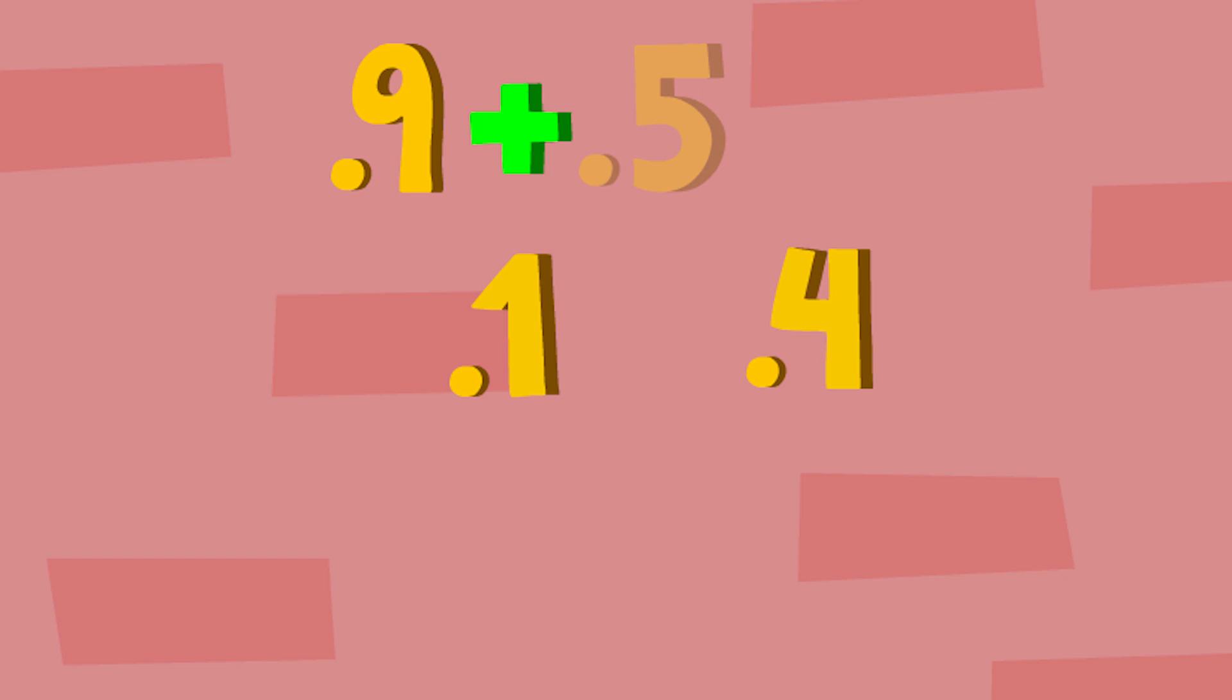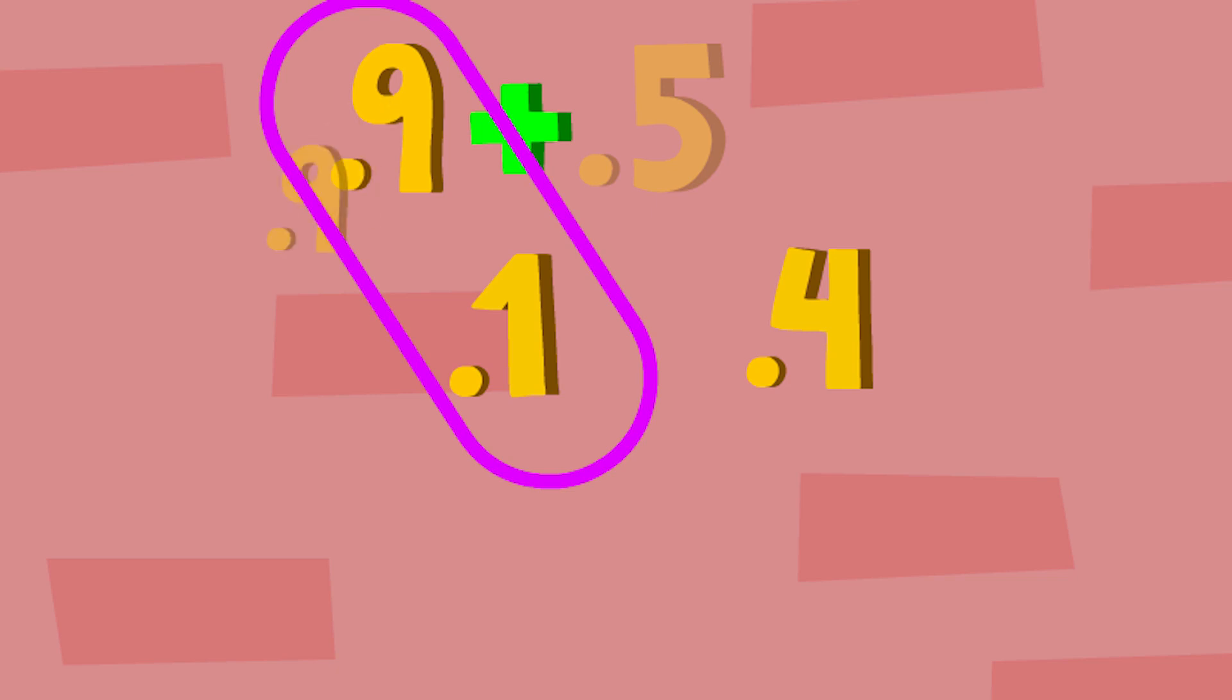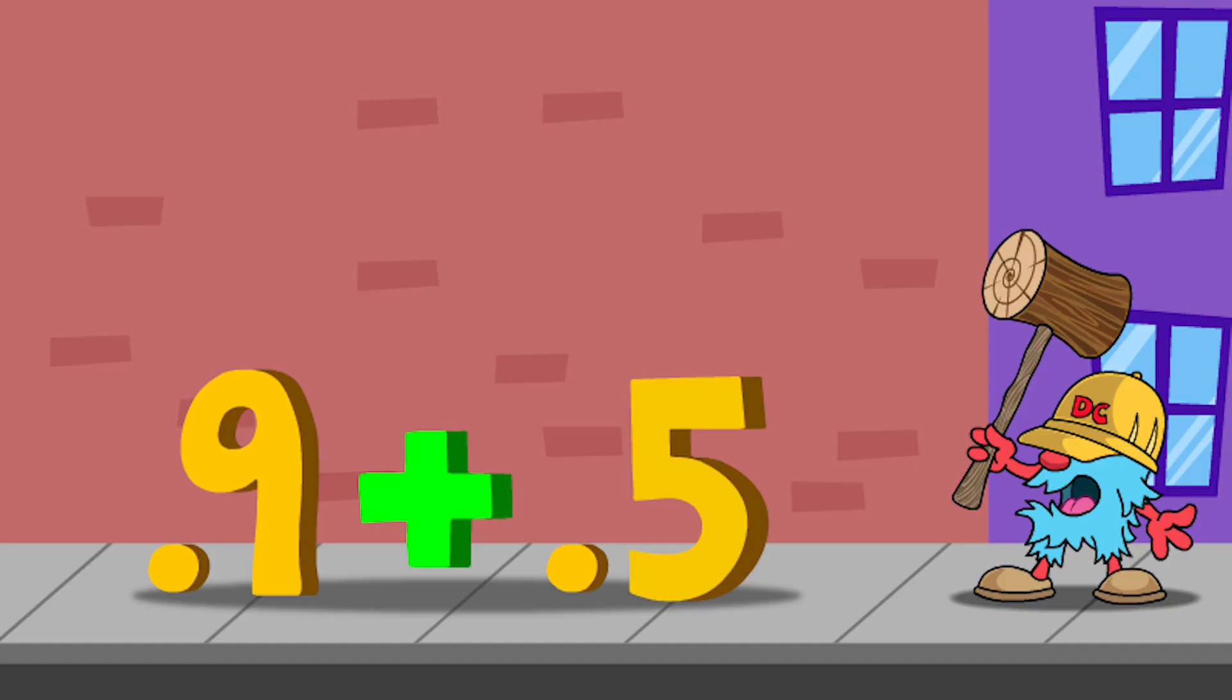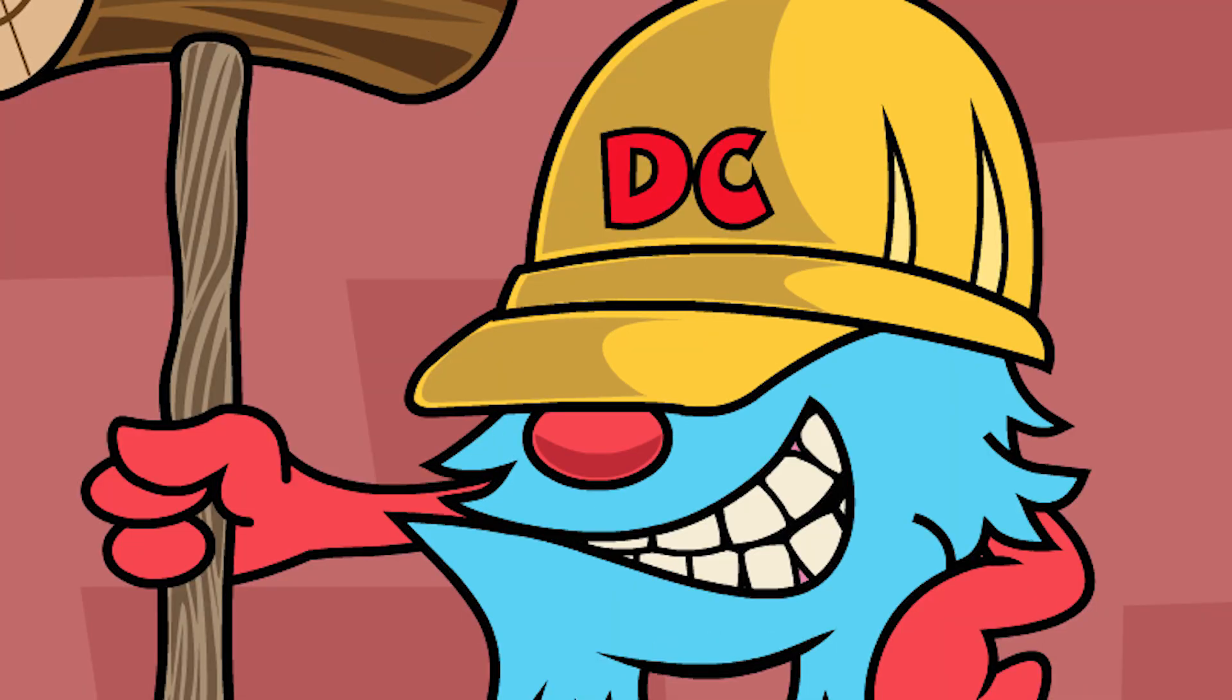I wonder why he chose to decompose 5 tenths into 1 tenth and 4 tenths. I wonder if he's looking at that 9 tenths and trying to think of how much a whole has in it. D.C. is going to compose the 9 tenths and the 1 tenth. He's very happy because 9 tenths and 1 tenth gets us that 1 whole plus the 4 tenths to get 1 and 4 tenths. D.C. just made the problem 9 tenths plus 5 tenths a lot easier by adding 1 whole plus 4 tenths to get 1 and 4 tenths. D.C. is very proud of his work.